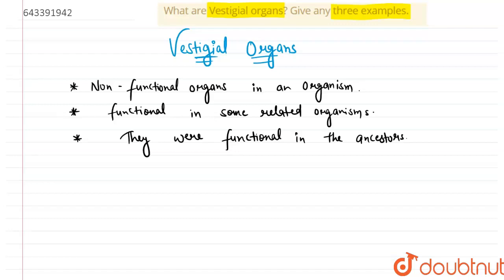Vestigial organs are non-functional organs in an organism that were functional in their ancestors. Hence, they are one of the important proofs that evolution has taken place — they serve as proof of evolution. In the course of evolution, we are not using these organs anymore, but they are still present because they were present in our ancestors. Nature is slowly reducing and removing these organs from our bodies.